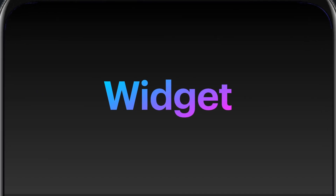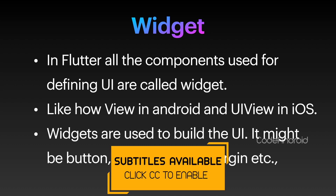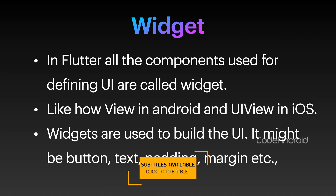In Flutter, all the components used for defining UI elements are called widgets, like how view in Android and UIView in iOS. It might be button, text, padding or margin — everything is considered as widgets.